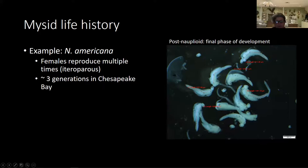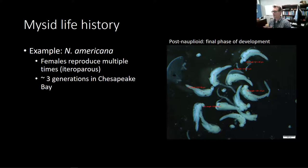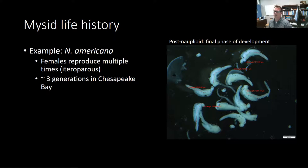A question came in: how does the mother nourish the embryos in the marsupium? The embryos actually have their own yolk. So all of the nutrition from the mother comes during the development of the initial embryo — then it's much like a baby chick using the yolk in its egg.